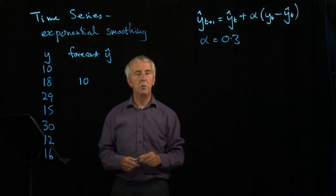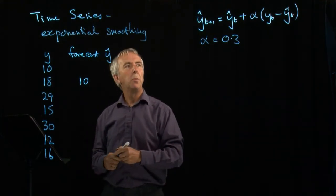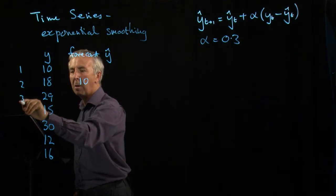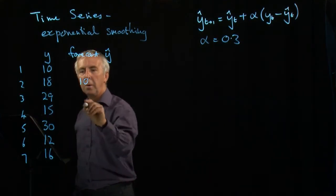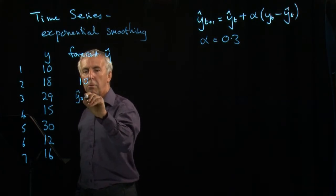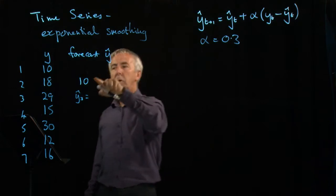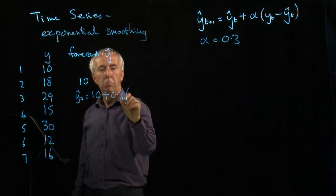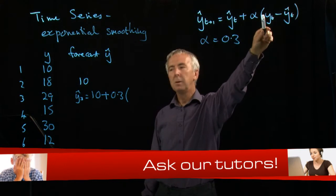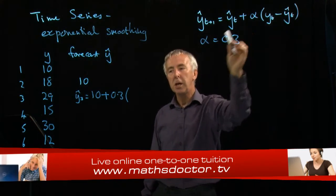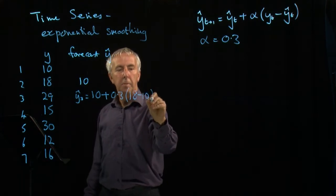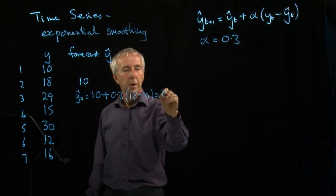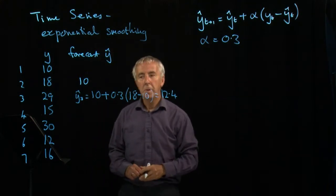And in a minute we'll talk about how we might choose alpha. So when alpha is 0.3, my forecast for this time period, if you like time period 3, would be that y hat at 3 is y hat at 2, my forecast for time 2, which was 10, plus 0.3 times, what was the error? Well, I thought it was going to be 10 but we actually got 18. So it's 18 minus 10, that's 8, 0.3 times 8 is 2.4, add on to 10. So my forecast for time 2 is 12.4.